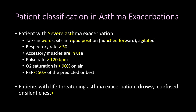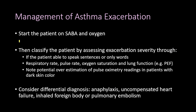The third group is life-threatening asthma exacerbation: patients present drowsy, confused, or with a silent chest. When a patient presents with an asthma exacerbation, start them immediately on short-acting beta agonist and oxygen, classify them, and then consider the differential diagnosis of anaphylaxis, uncompensated heart failure, inhaled foreign body, or pulmonary embolism.